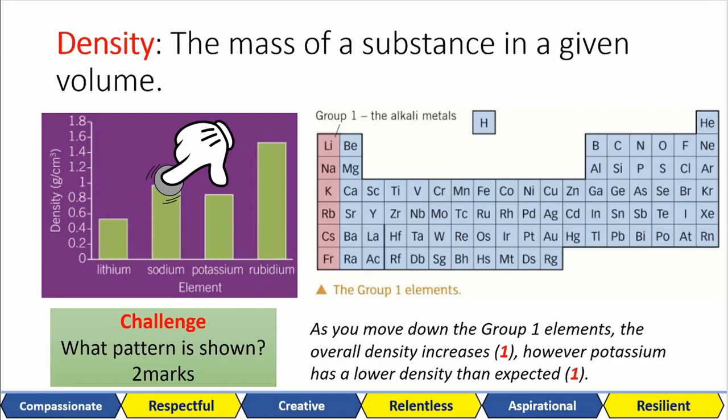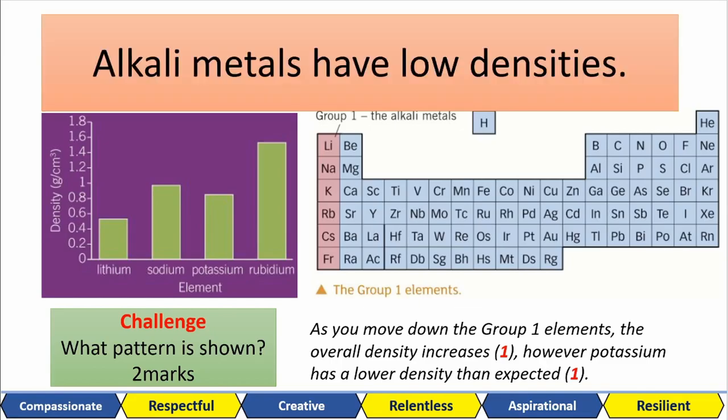We see that the overall density seems to increase. That's one mark. But potassium has a lower density than expected. That's your second mark there. If you're asked to compare alkaline metals to regular metals like zinc and iron, alkaline metals all have low densities compared to regular metals. Alkali metals have low densities.